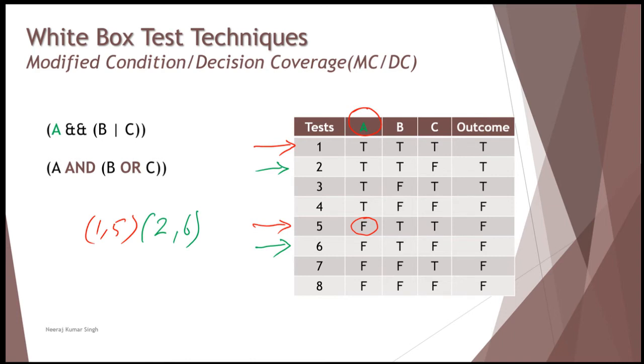When you talk about, again, the next scenario, where if you try to consider test case number three, and you see that, okay, let me just pick up another color here. So here, if you see, A is true, B is false, and C is true. And then if you consider test case number seven, A is flipped.